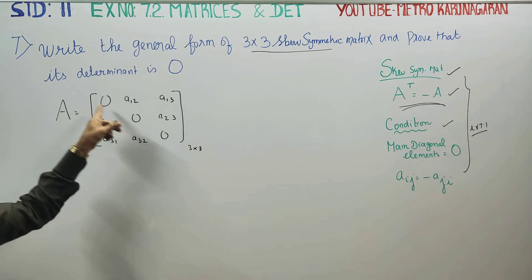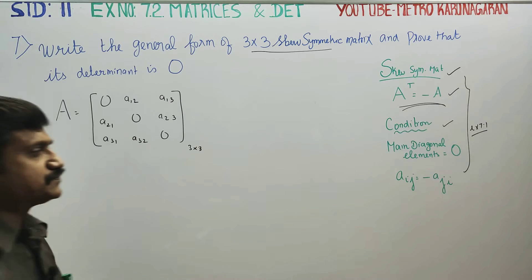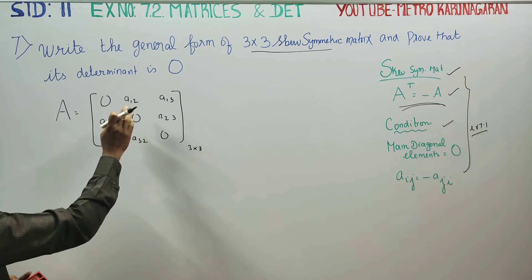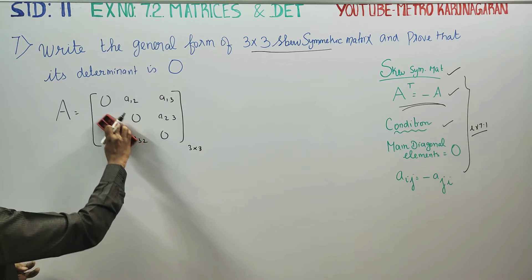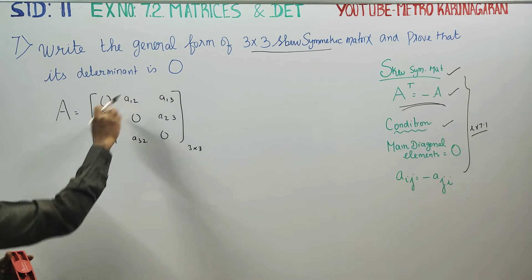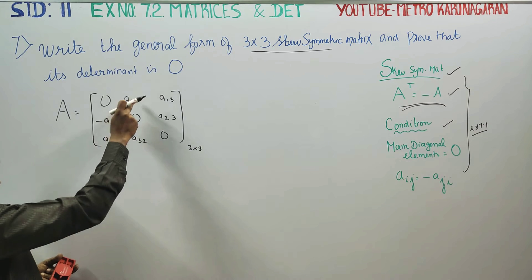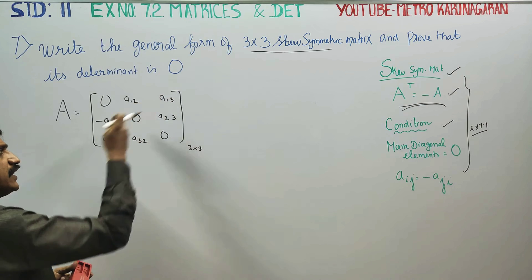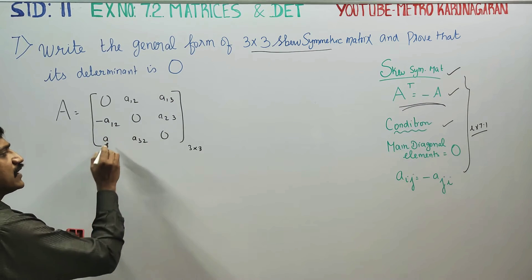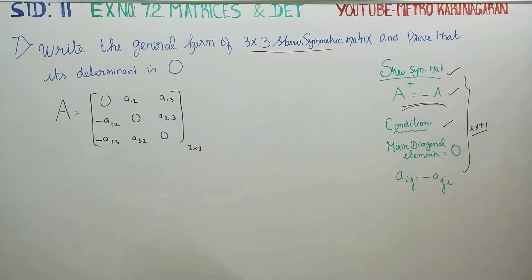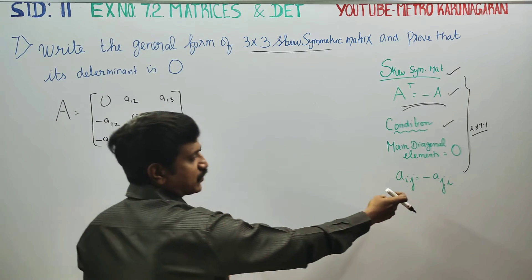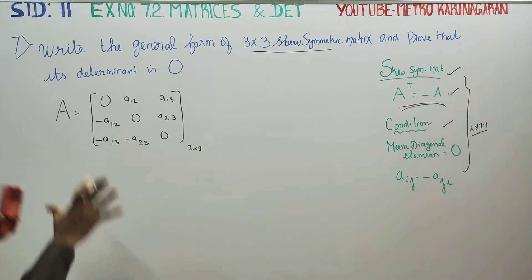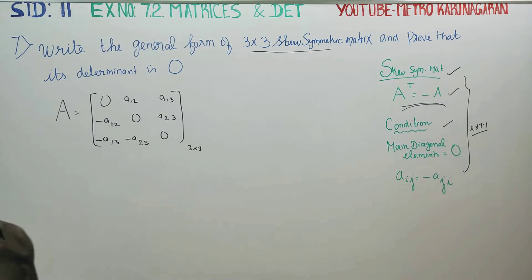The rule is the main diagonal is all zeros. The condition A-i-j equals minus A-j-i means that A12 and A21 are negatives of each other, and similarly A23 and A32 are equal in magnitude but opposite in sign. This is the general format of the 3 by 3 skew matrix.